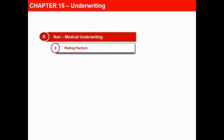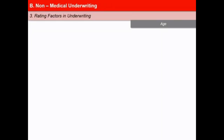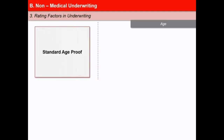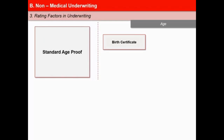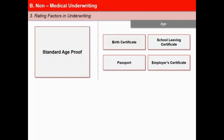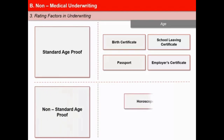In this next video, we will learn about some other rating factors of non-medical underwriting. The mortality risk is closely related to age, so the underwriter needs to be careful while considering insurance for people of advanced age. An important part of the underwriting process is admission of age after verifying proof of age. There are two types of age proofs — standard and non-standard. Standard age proofs are normally issued by a public authority, such as a birth certificate issued by a municipality or other government body, or the school leaving certificate. Where such proofs are not available, the proposer may be asked to bring a non-standard age proof such as a horoscope or a self-declaration.